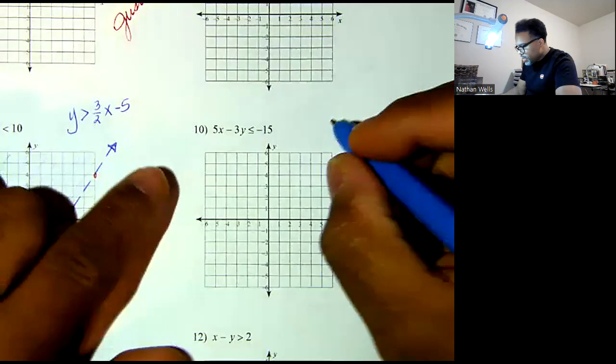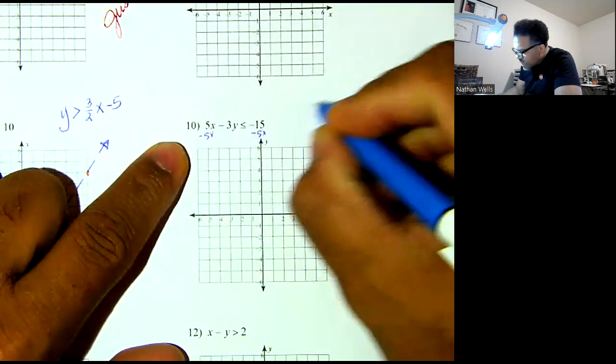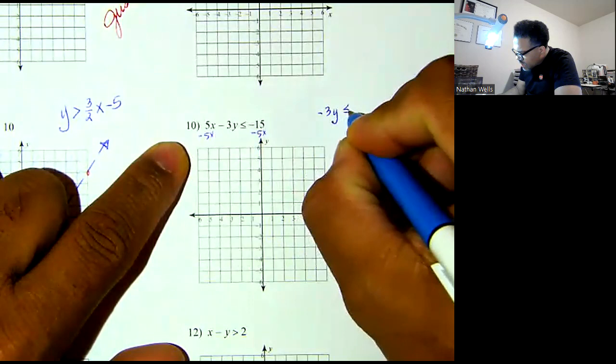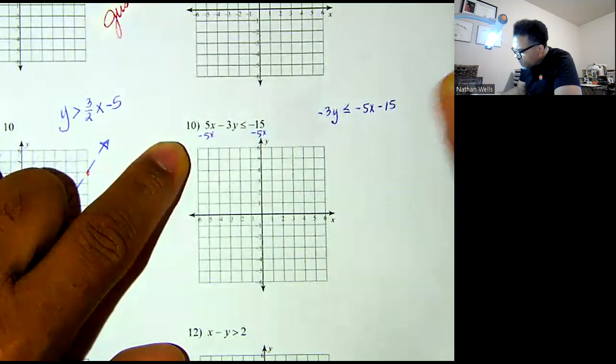Okay, before I go ahead and do this problem, I'm going to subtract 5x from both sides. I'm left with negative 3y less than or equal to negative 5x minus 15.